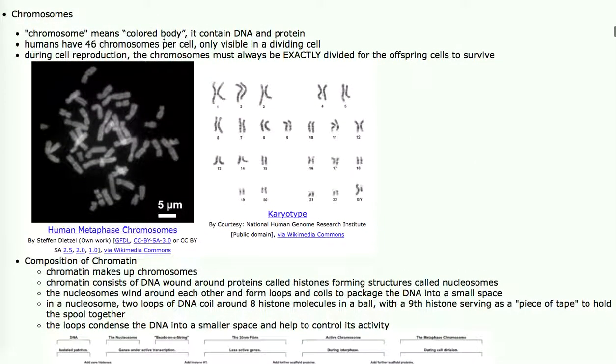Now we've got to talk about chromosomes. Chromosome means colored body. A chromosome contains DNA and protein. Human cells generally have 46 chromosomes, although you can inherit the wrong number. Down syndrome patients have 47 chromosomes per cell, but generally speaking, human cells have 46. You only see chromosomes when a cell is dividing. If a cell is not dividing, the DNA is in chromatin form. It's loosely packed and you can't see individual chromosomes at all.